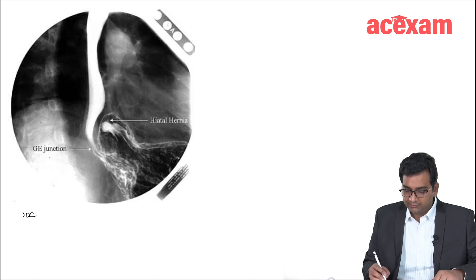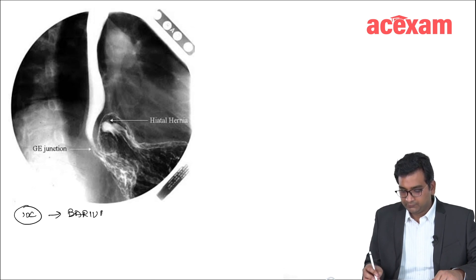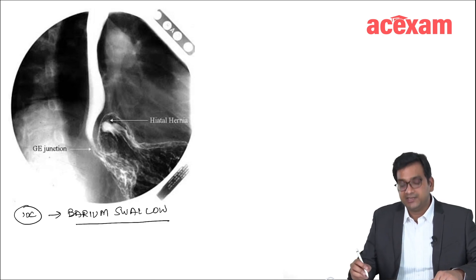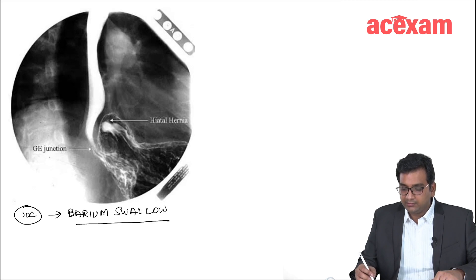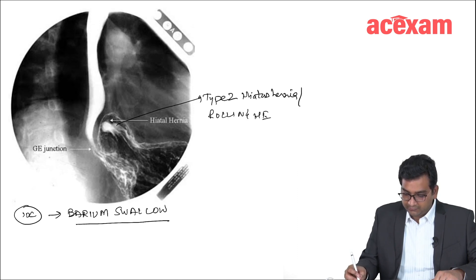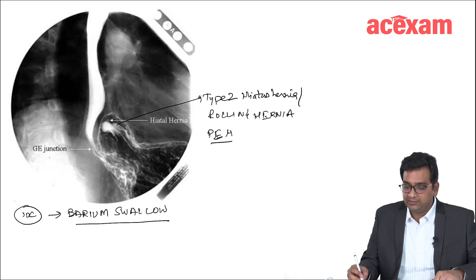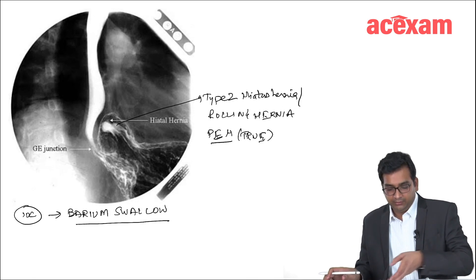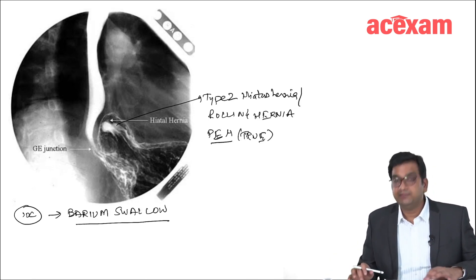The investigation of choice to detect hiatus hernia is barium swallow. Now, identify the type of hiatus hernia shown: the GE junction is normal and there is only the stomach going into the chest. So this is type 2 hiatus hernia — rolling hernia or true paraesophageal hernia. The investigation of choice is barium swallow.